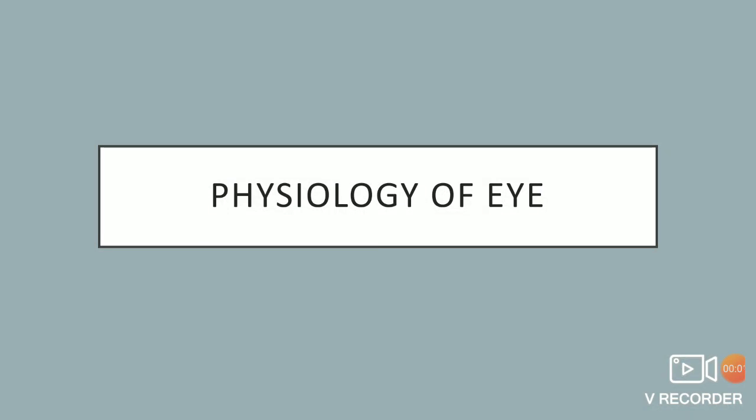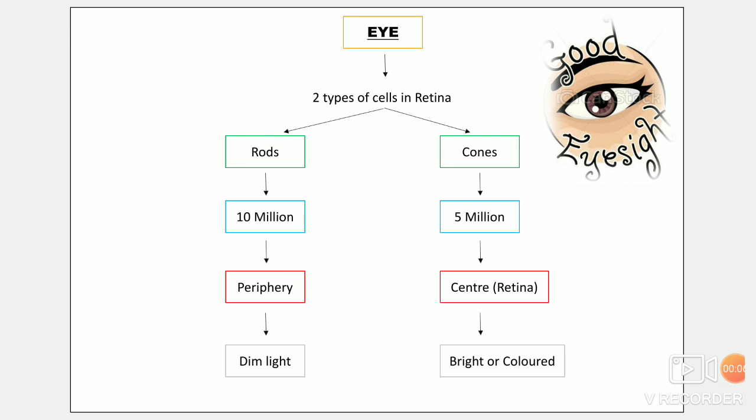Hello everyone, today we will be learning about the physiology of the eye. First we see the cells of the retina. There are two types of cells in the retina: first is rods and second is cones. There are 10 million rods in the retina, situated in the periphery, and they are helpful in dim light. There are 5 million cones in the retina, situated at the center, helpful in bright and colored light.